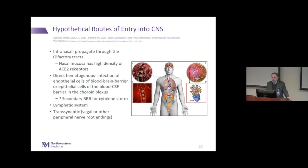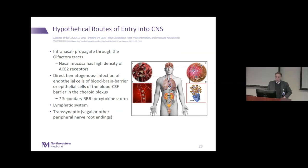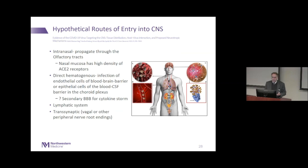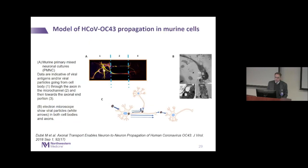Hypothetically, how can this virus get into the CNS? The nasal mucosa has the highest density of ACE2 receptors in the bronchial tree, so infection through the nose is plausible. There may be direct hematogenous spread from infection of endothelial cells disrupting the blood-brain barrier, or a secondary process due to blood-brain barrier breakdown in the setting of cytokine storm. Transynaptic transmission is another possibility, as is lymphatic system involvement.